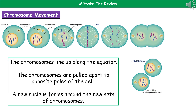In mitosis itself, the first thing that happens is the nucleus breaks down and the chromosomes line up along the centre of the cell, called the equator, as you can see in the fourth diagram. Once they've lined up, they're pulled apart to the opposite poles or ends of the cell by the spindle fibres, shown in the fifth diagram. Once that's happened, a new nucleus forms around those new sets of chromosomes, as shown in the final diagram.